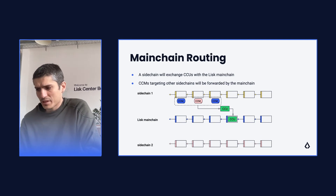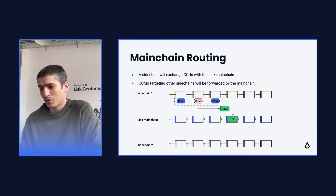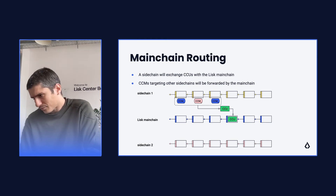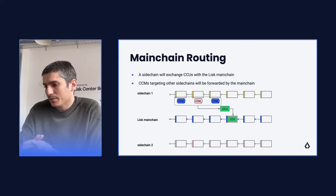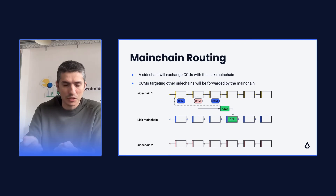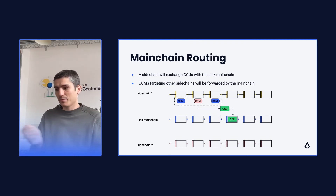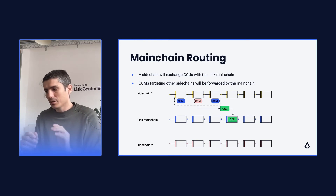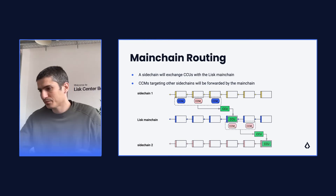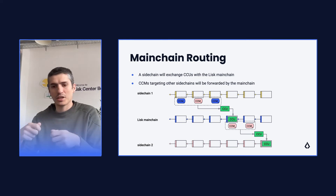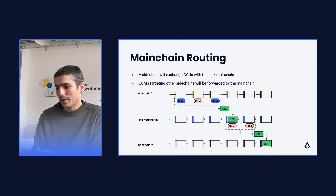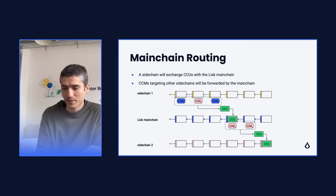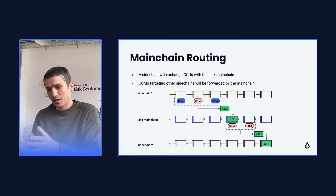Something important to note is that by default, all cross-chain updates are routed by the main chain. This means that the sidechain will only have a channel with the main chain by default. Cross-chain messages from the sidechain to any other chain in the ecosystem go first through the main chain channel in a CCU that is posted on the main chain. The main chain is then in charge of routing these messages to the relevant channel. The main chain will contain a channel for each sidechain in the ecosystem, but sidechains by default only contain a channel with the main chain.